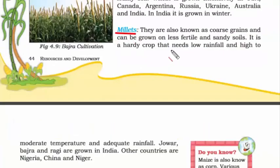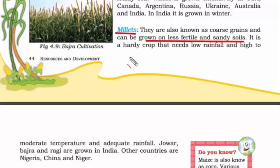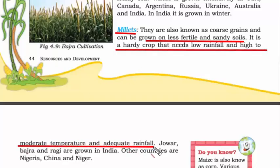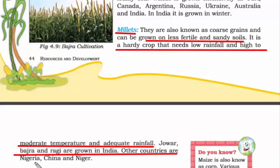Millets are also known as coarse grains and can be grown on less fertile and sandy soil. They are a hardy crop that needs low rainfall and high to moderate temperature. Jowar, Bajra, and Ragi are grown in India. Other producing countries include Nigeria, China, and Niger. Millets are also simply called Bajra.